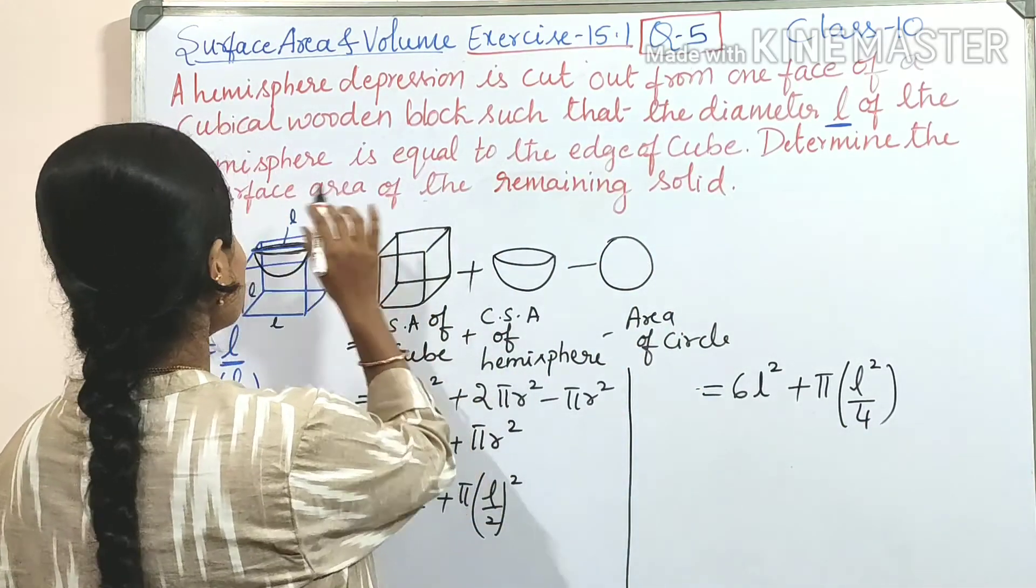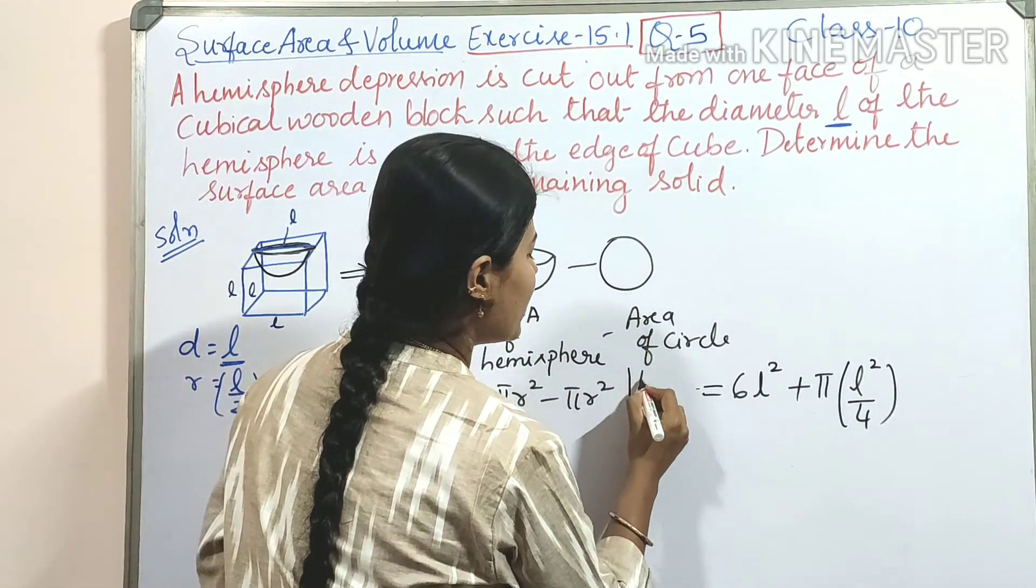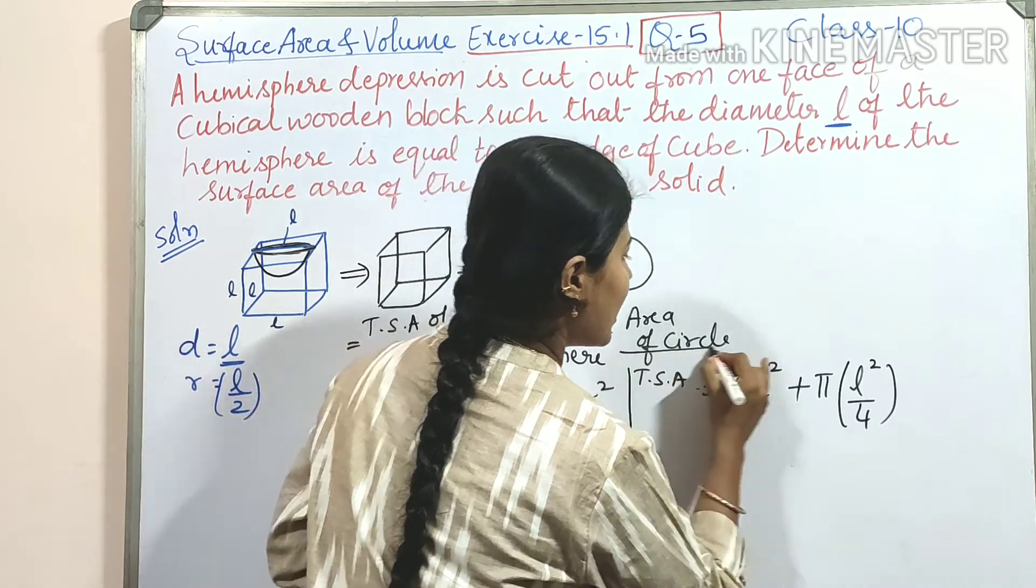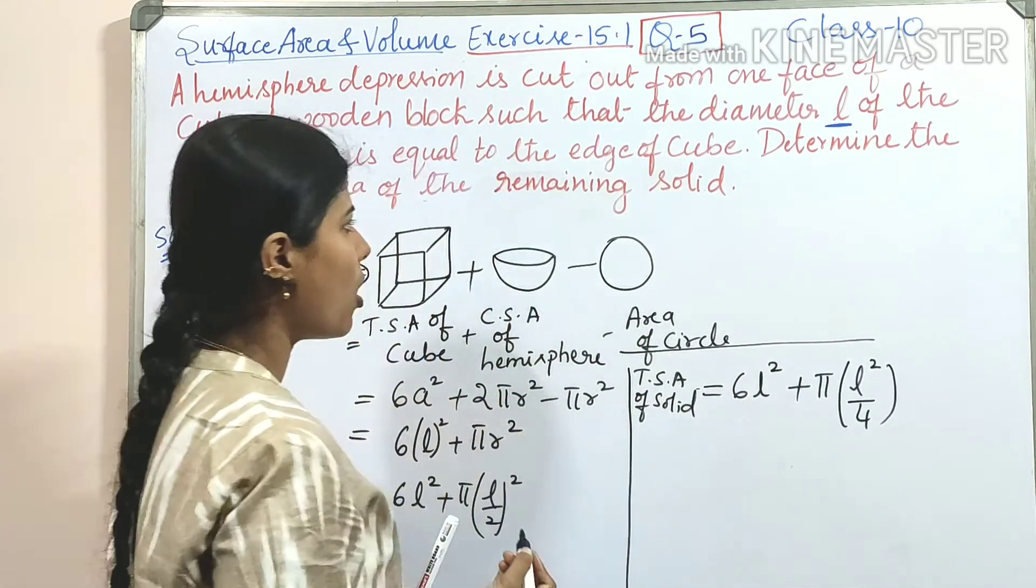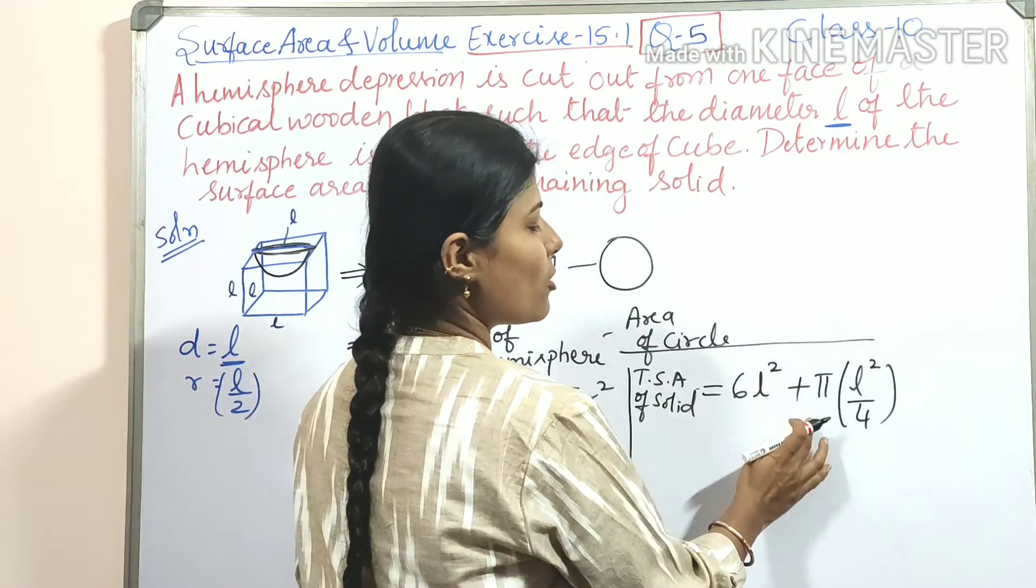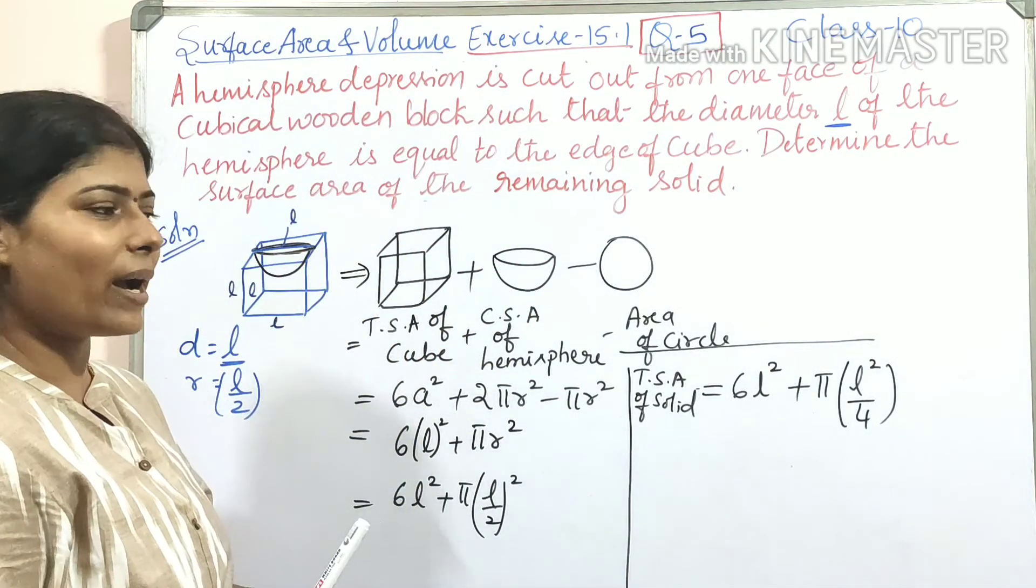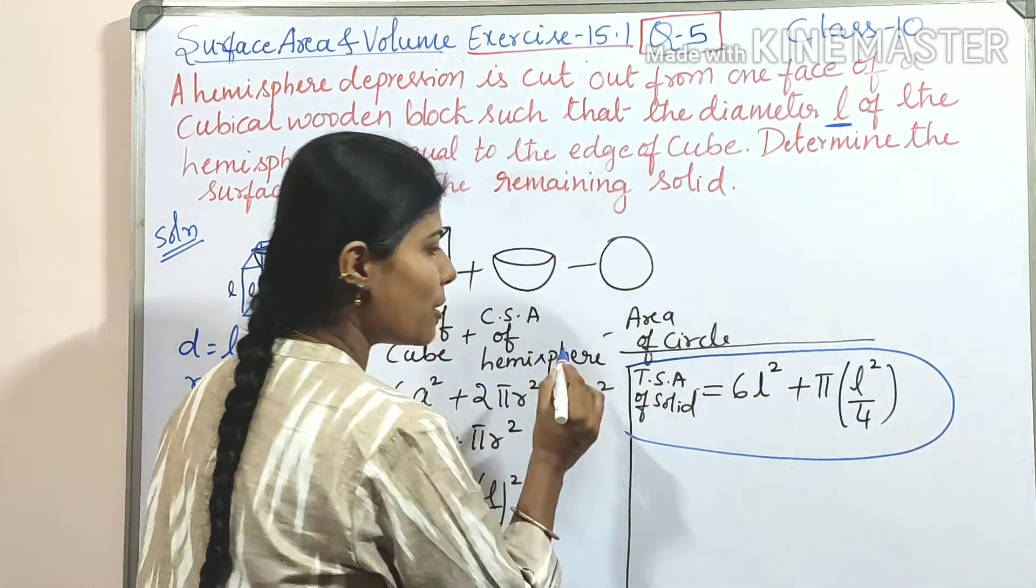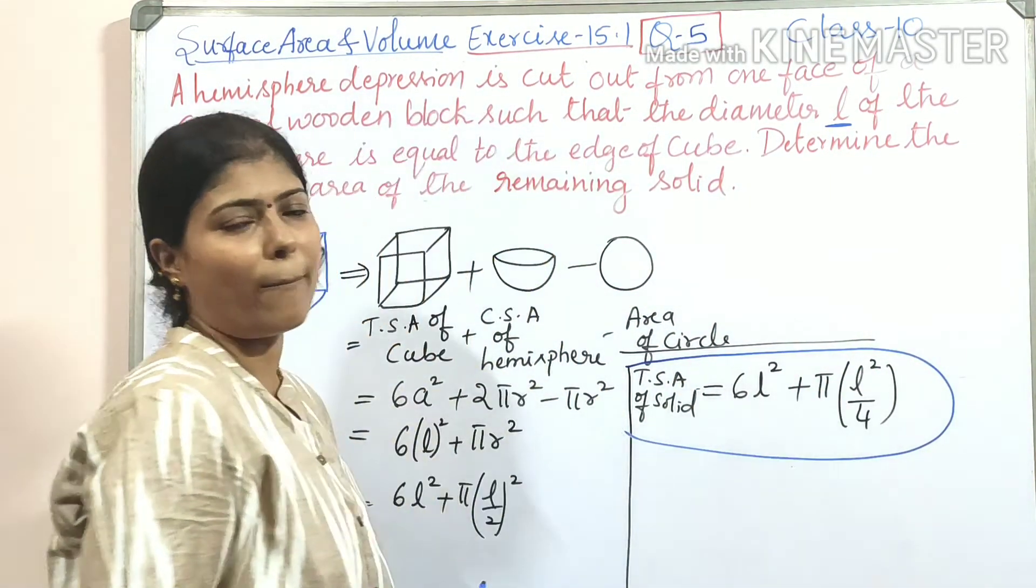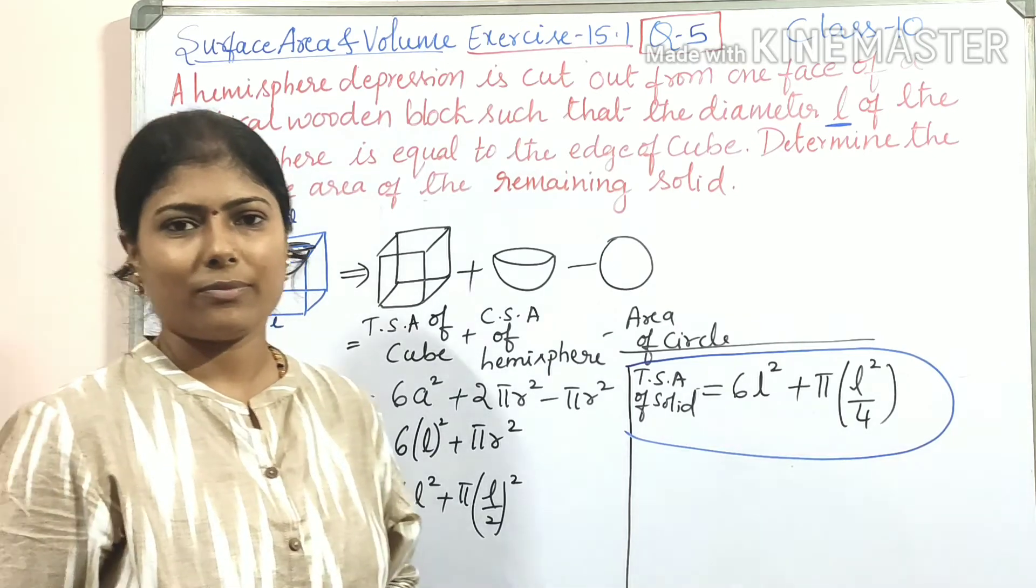So here total surface area of remaining solid. So total surface area of solid or wooden block is 6L² plus πL² by 4. Here we don't have exact values. So here the answer remains in terms of L like π. Thank you.